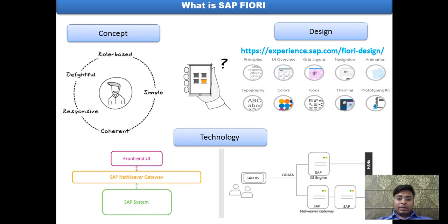In the design dimension, you can find all the design dimension details in the mentioned link. It is most important to go through details like Fiori principles, navigations, animations, color, and icons that need to be used for Fiori application development.